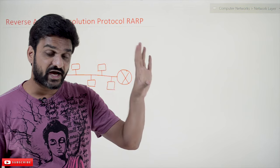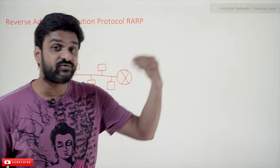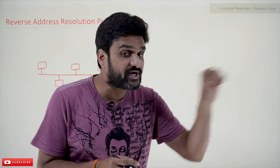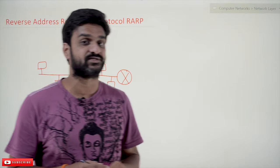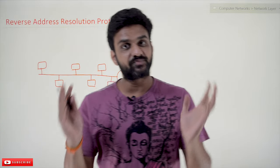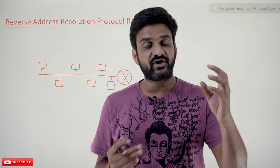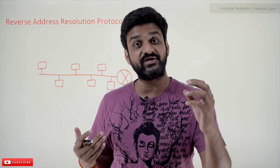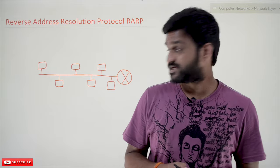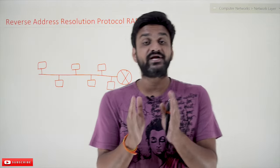For a given IP address, we get the corresponding MAC address. The reverse of it is: if we have the MAC address, we are going to get the corresponding IP address. Where is it used? In normal general communication, we are in need of MAC addresses, but there is also a need for IP addresses.